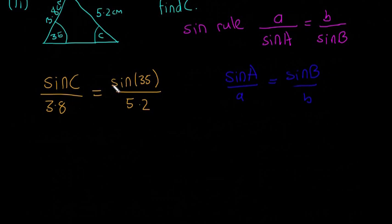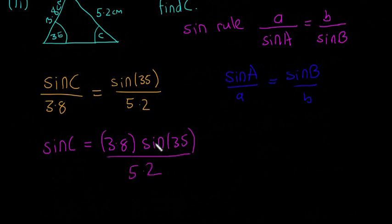So now we're going to multiply both sides by 3.8, so to get sine on its own. So now we're going to have sine of C. If we multiply both sides by 3.8, we're going to have 3.8 and sine 35, all divided by 5.2.